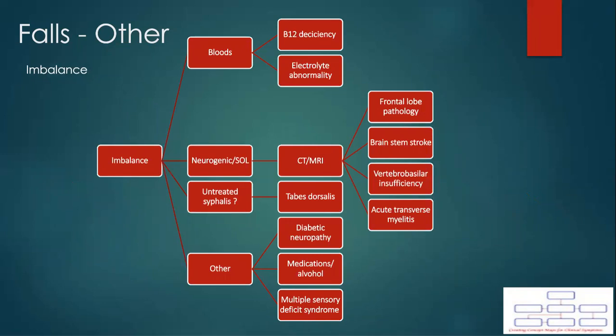Lastly, imbalance can be due to many causes which may lead to a fall. A full workup is required, as with every case. With bloods, we may rule out any obvious abnormalities. However, it may also be a neurological condition, so a CT or MRI would be required. Another rare cause could be due to untreated syphilis, therefore a sexual history is needed. Untreated syphilis may lead to a condition called tabes dorsalis.